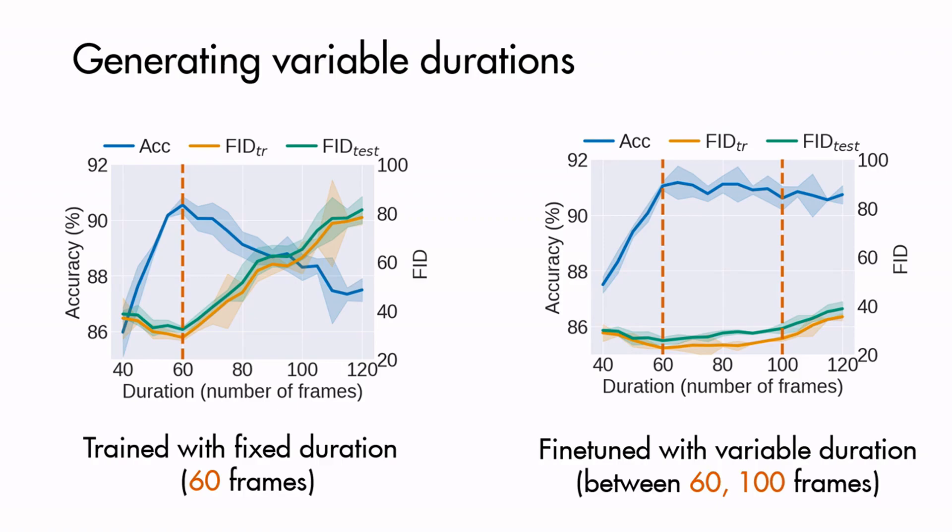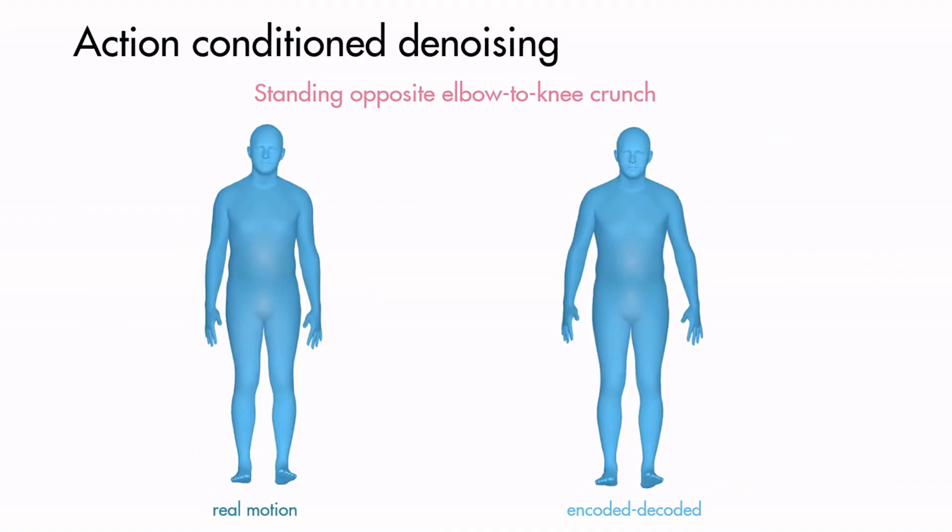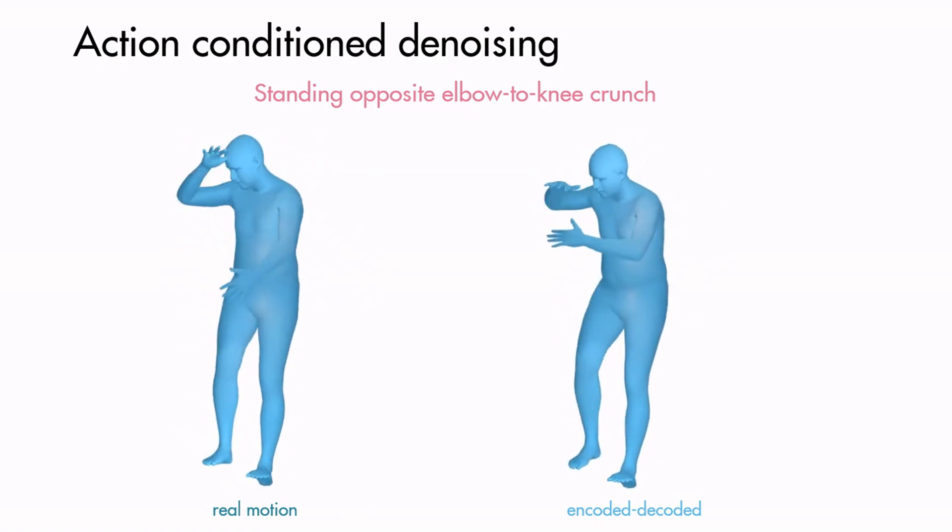As a side product of our model, we can perform motion denoising by encoding-decoding the noisy motion estimates obtained from monocular RGB videos.